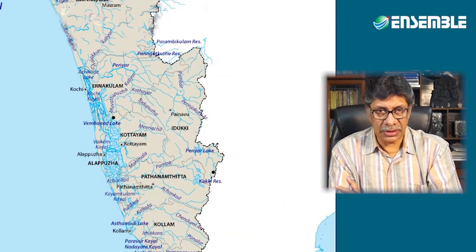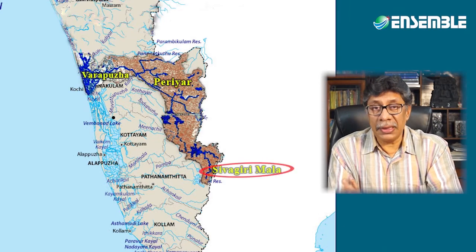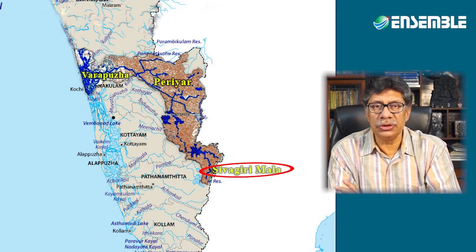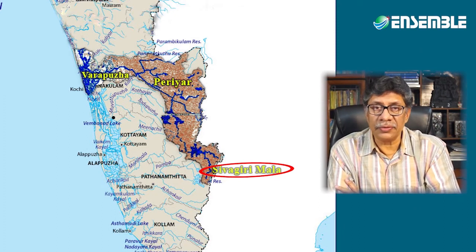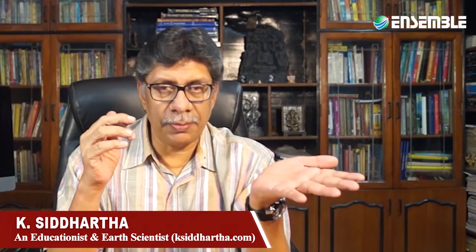The Periyar is the longest river in Kerala, originating from Sivagiri Mala. Numerous rivulets join to form the Periyar river. After a brief bifurcation, the Periyar joins the Vembanad Lake. This concludes the description of the peninsular rivers — those flowing into the Bay of Bengal as well as into the Arabian Sea.